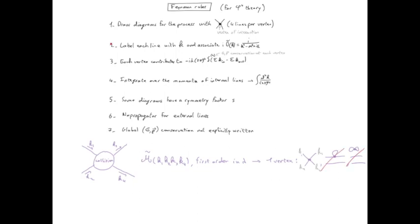The second rule tells us to associate a k with each line, so these are given by the incoming and outgoing four momenta. We have k1, k2, k3, k4. And we should in principle also associate a propagator for each of these lines, but according to rule number six we have no propagator for external lines, so we don't need to incorporate any propagator here. And that's because we have no internal line.